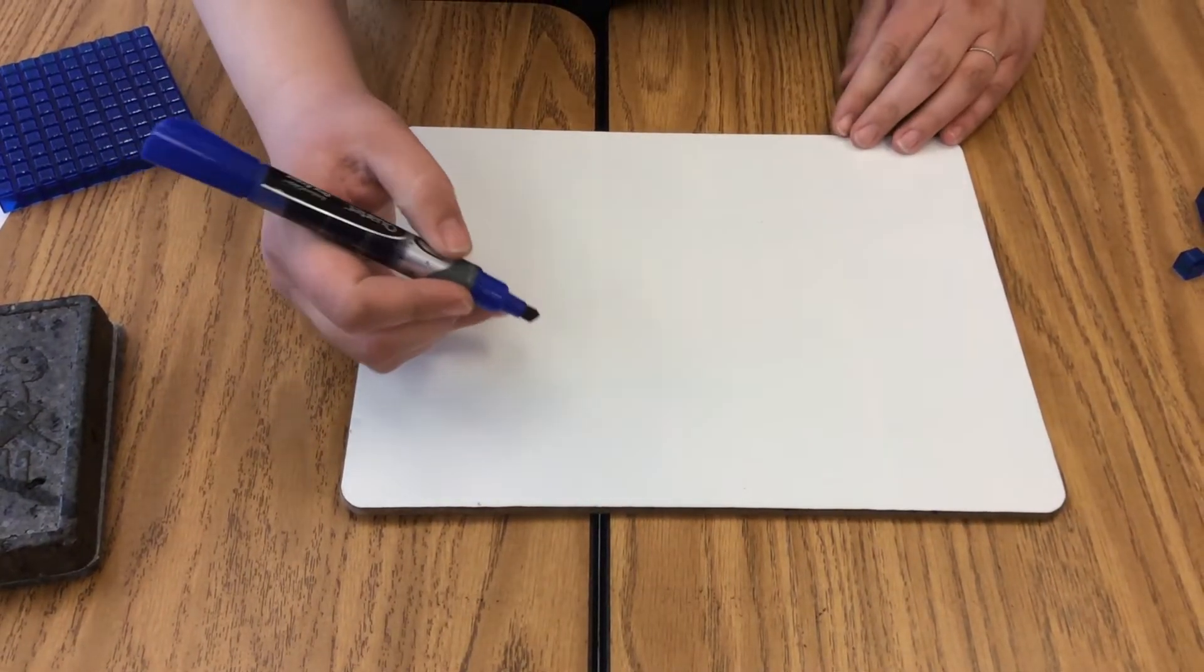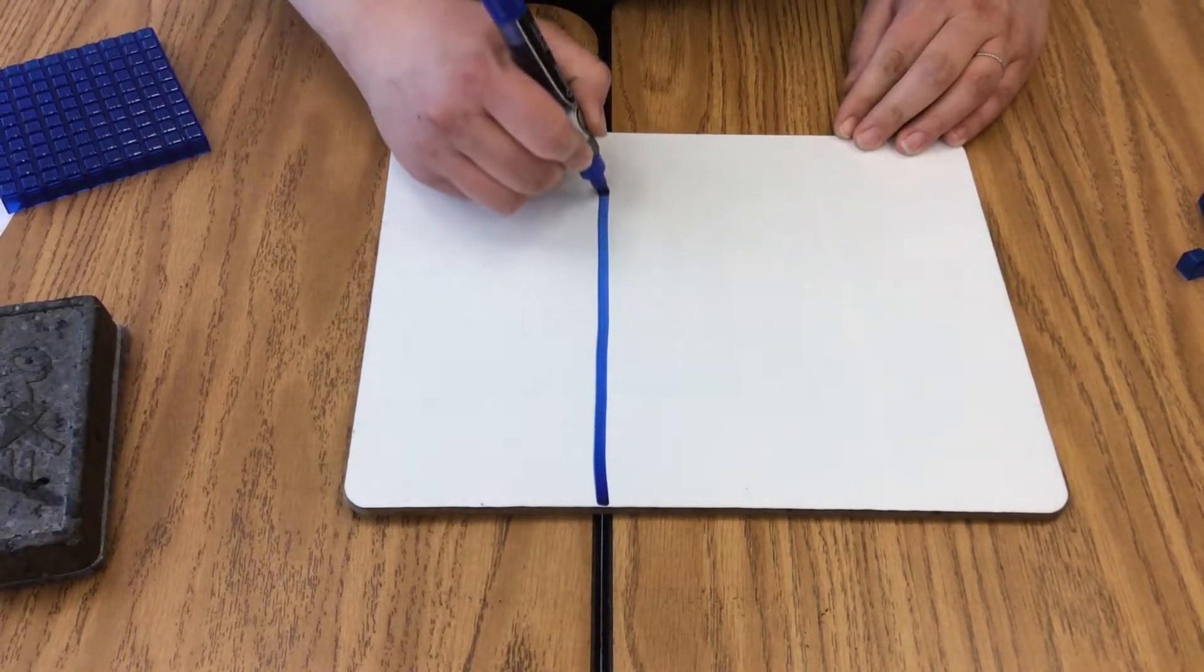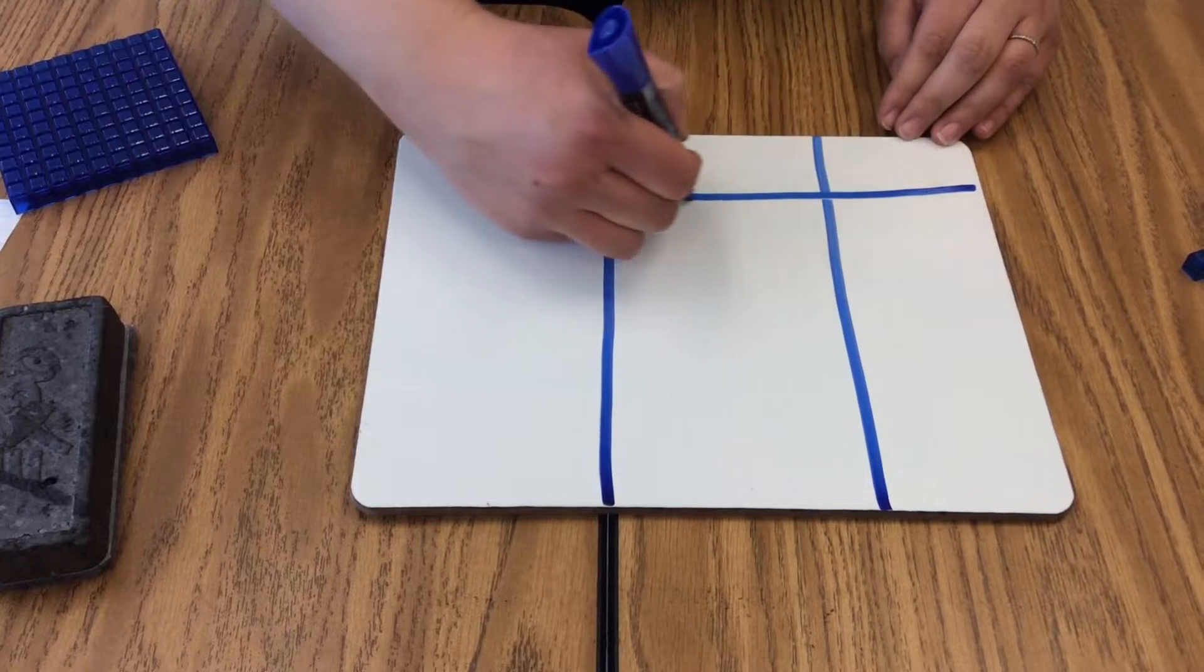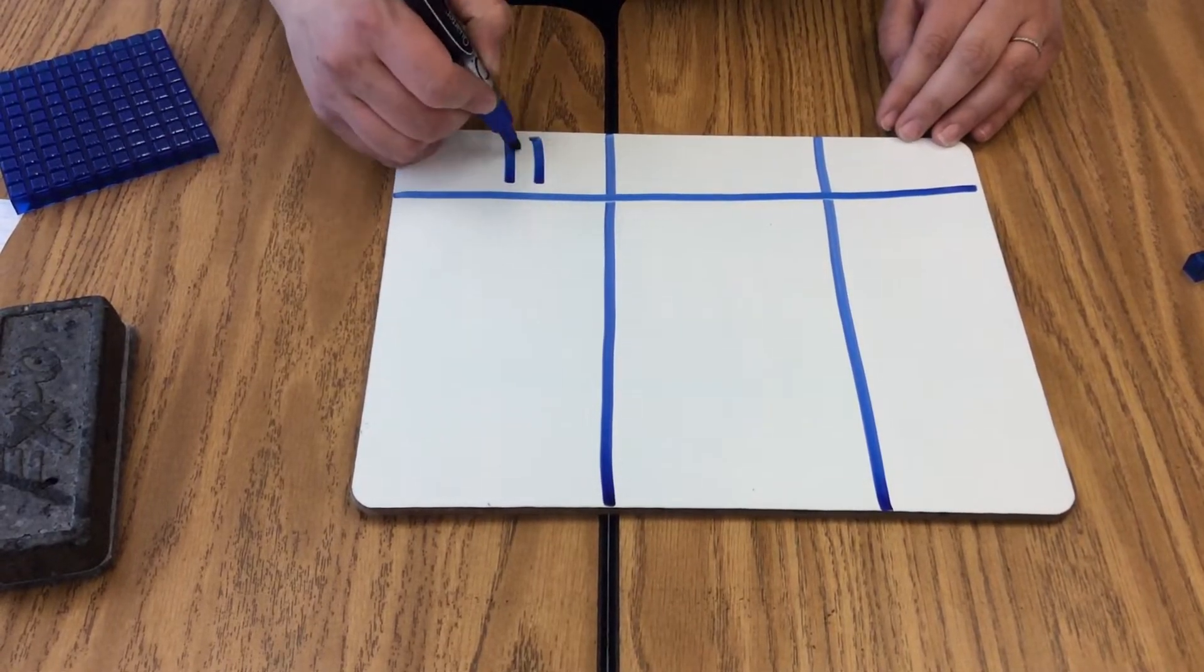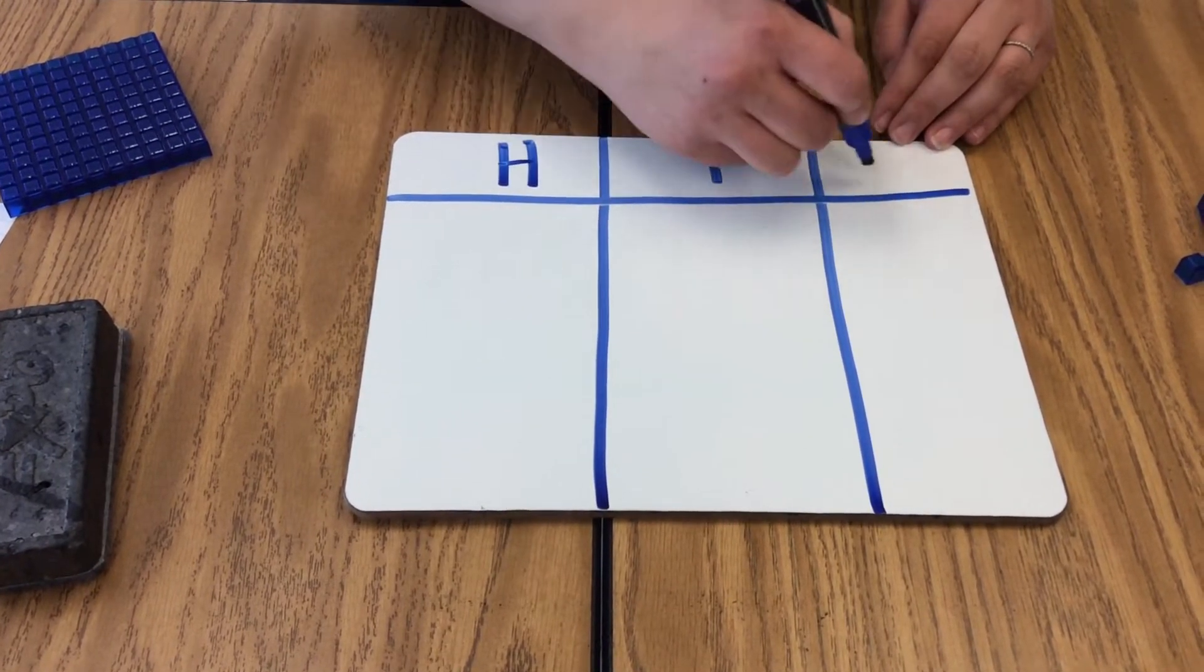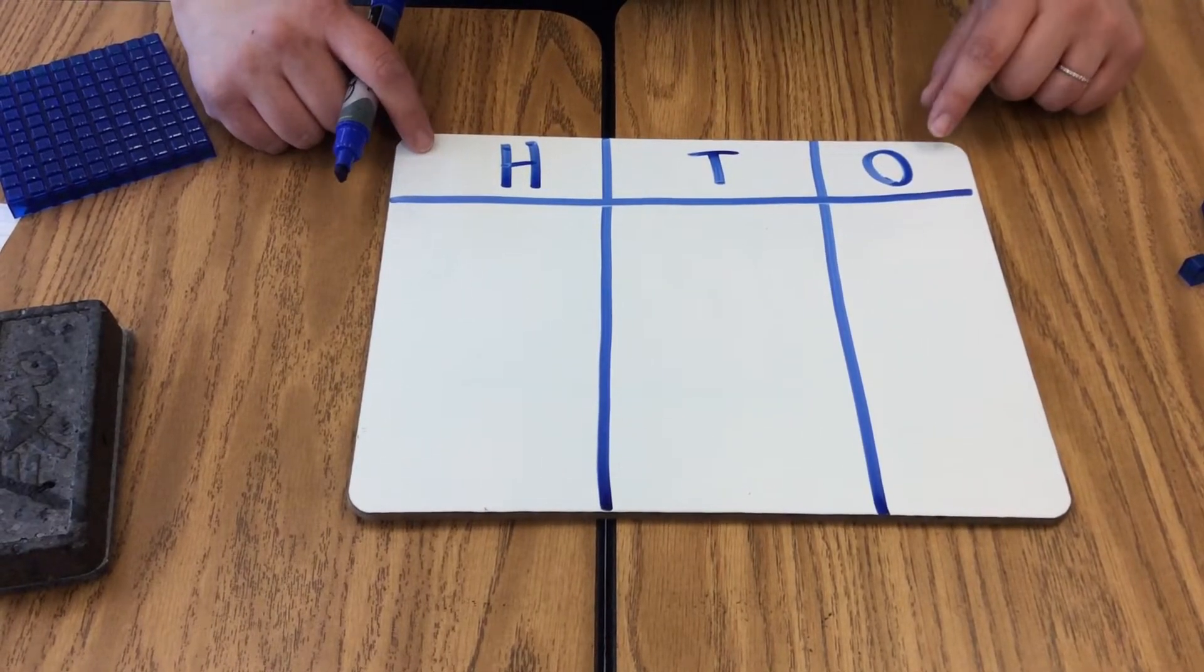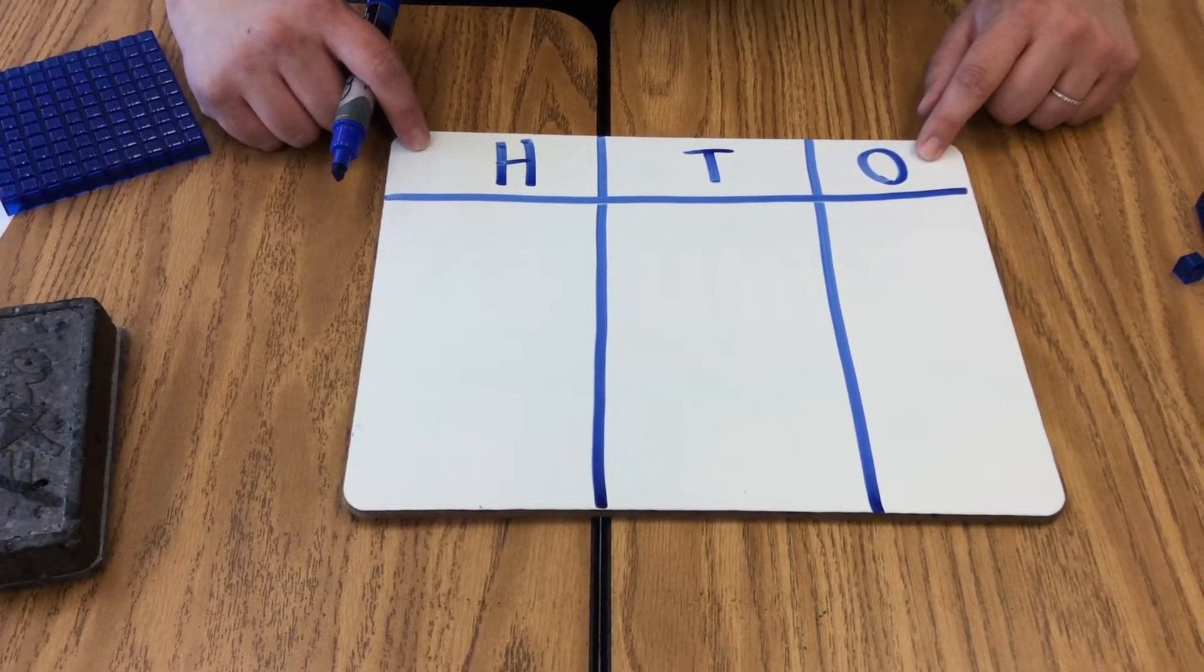When we're drawing models of numbers, we start with an HTO chart. Your chart needs to have three columns, and you want to make sure there's enough room to model the number. We start with an H for the hundreds place, a T for the tens place, and an O for the ones place.